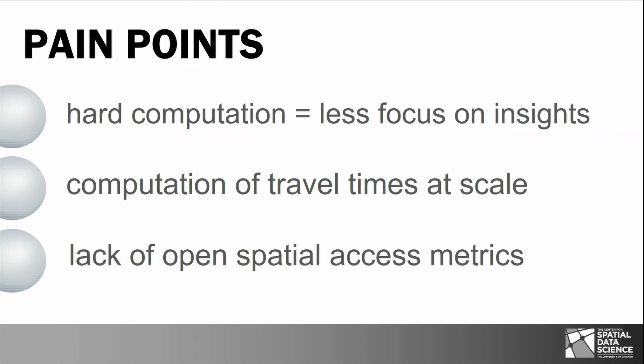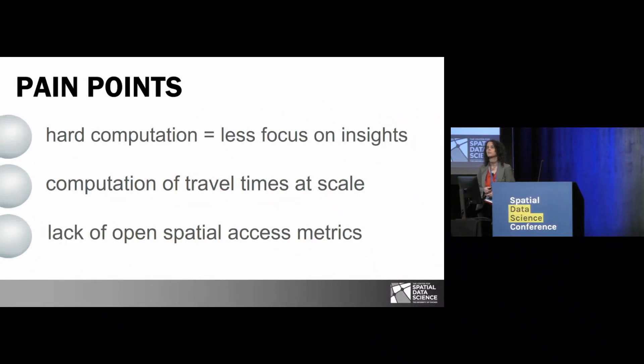The reason why that's the case is because it's hard to compute the spatial access metrics, and especially the underlying travel times at scale — for instance, for all neighborhoods in the nation. And until recently, there was also a lack of open spatial access metrics to implement this calculation.